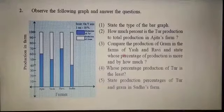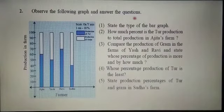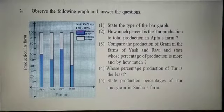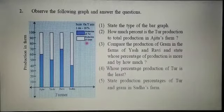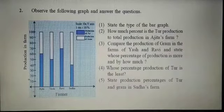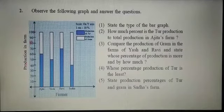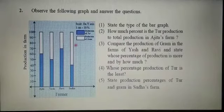The next question from Practice Set 11.3: observe the following graph and answer the questions. The graph is already given. Scale is 1 centimeter equal to 10%. Two pieces of information are given: production of tur and production of gram. On the X axis, names of farmers are taken. On the Y axis, production on the farm. You will not have to draw the graph — just write down the answers.